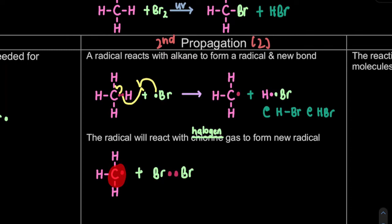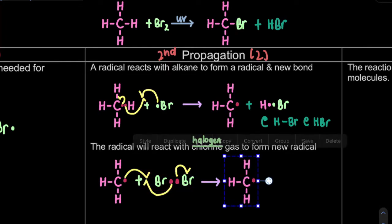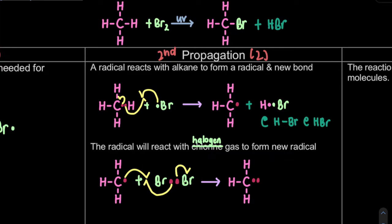The carbon radical will couple up with one of the bromine atoms to form our product. To show this, draw the curve half-headed arrow meeting at a spot between the carbon radical and the bromine. Then show the other electron going back to the second bromine. So the carbon radical couples with one bromine to form the product CH3Br, and the second bromine becomes a bromine radical.